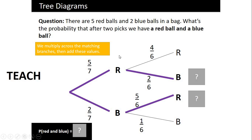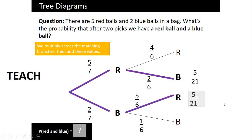The question asks for the probability of a red and a blue after two picks. A red then blue gives 5/7 × 2/6 = 10/42, which cancels to 5/21. Or we could get blue then red: notice the seven and six remain the same on the bottom — the two and five are just swapped, giving the same answer of 5/21. Since we want this option or this option, we add these two combinations together. So the probability of a red ball and a blue ball after two picks is 10/21.